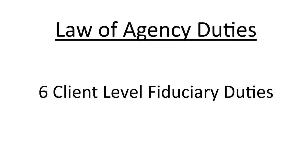My name is Jonathan Goforth. This video is on the law of agency duties. There are six client level fiduciary duties, and this is something you've got to know to pass the real estate exam. I'm a licensed realtor in Missouri and Kansas with Keller Williams Platinum Partners, and I have my broker's license in Missouri. I've been a realtor for 25 years and I'm honored to be listed in Forbes magazine for the past three years as one of the top market leaders in the country in real estate.